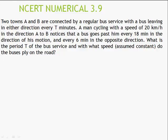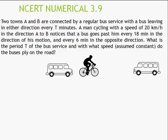Next question: there are towns A and B, a bus runs between them with time period T minutes. A man on a cycle goes at 20 km/h. When he goes in the same direction as the bus, he meets a bus every 18 minutes. When he goes in the opposite direction, he meets a bus every 6 minutes. We need to find the bus's time period and speed. Key concept: buses run regularly from both sides, so the distance between successive buses is always constant.